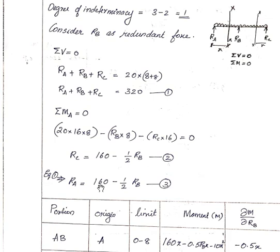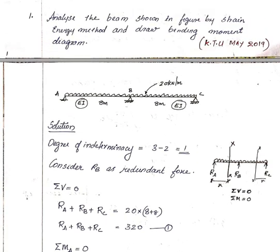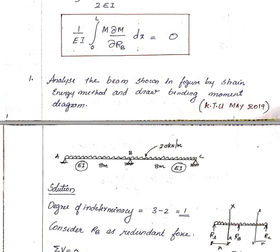Now we apply the strain energy compatibility equation. The equation is: (1/EI) × integral from 0 to L of M × (∂M/∂RB) dx = 0. This treats RB as the redundant reaction and solves for it.